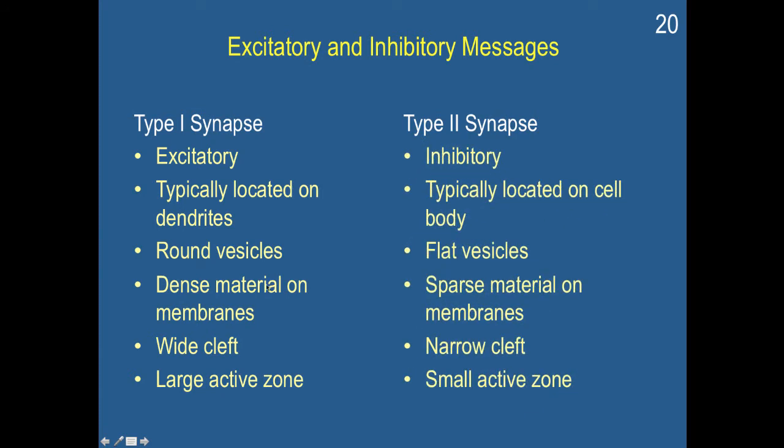A type two synapse on the other hand is inhibitory. It's typically located on the cell body. Remember how I described how you can have these as gatekeepers, that it would be designed to stop a cell from firing. The vesicles actually tend to be flat in here, and there's sparse material on the membranes, and a more narrow cleft, and a smaller active zone. So these inhibitory effects, these gatekeeper inhibitory elements are on the cell body.